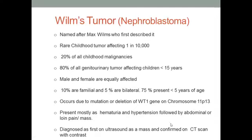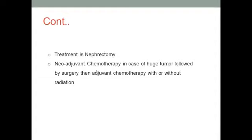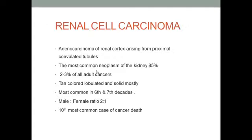Wilms tumor is diagnosed on ultrasound, but CT scan can be more diagnostic. You can see it can present as a huge tumor on cut section. Treatment is nephrectomy, but a better option is to give neoadjuvant chemotherapy first if the tumor is big, followed by surgery, and then chemotherapy. Childhood tumors are surprisingly more chemo-sensitive, in contrast to adult tumors which are chemo-resistant.